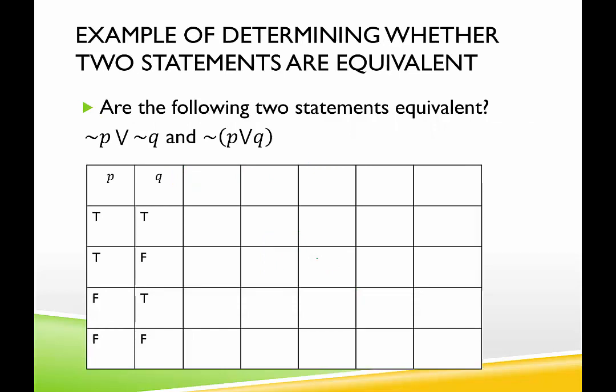Now we're going to look at some examples of determining whether two statements are equivalent or not. Go ahead and look at them and decide if you think they are equivalent or not. Sometimes we separate them and do two separate truth tables, but I decided I can just do this in one and keep track of those two columns at the end. I need negations of both P and Q for the first statement, so I'm going to call this statement 1 and this statement 2. For statement 1, I also need not P or not Q.